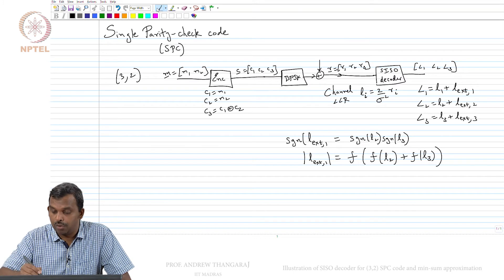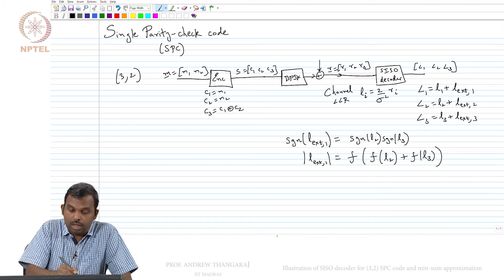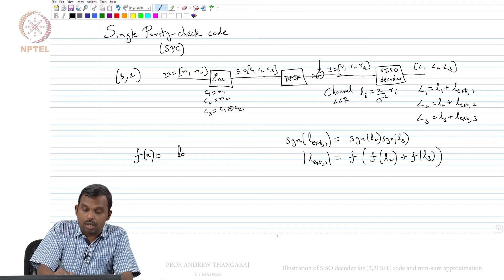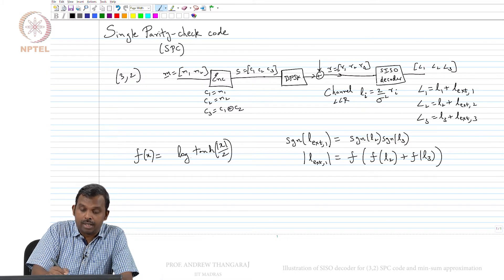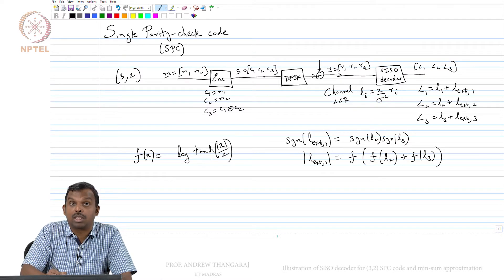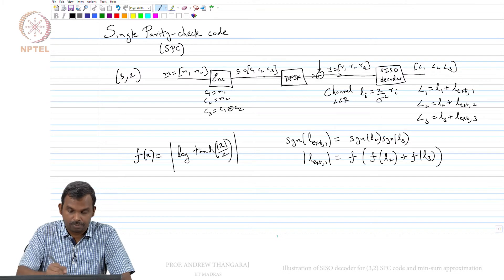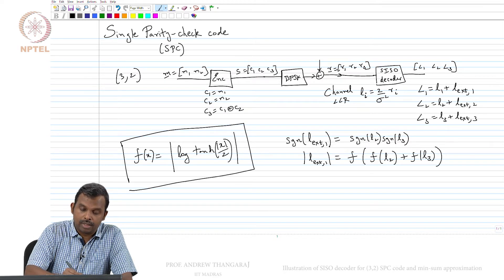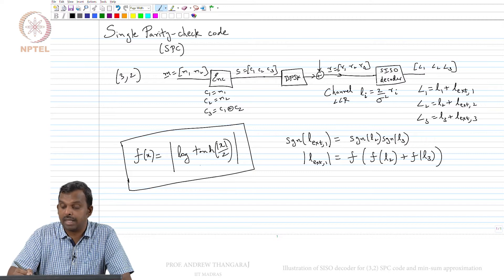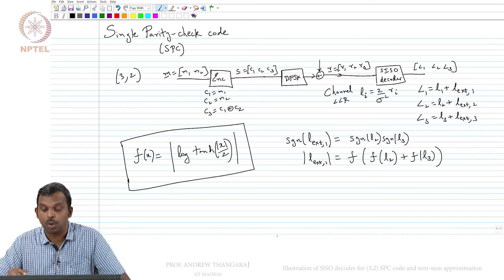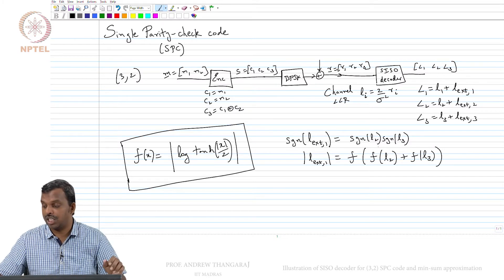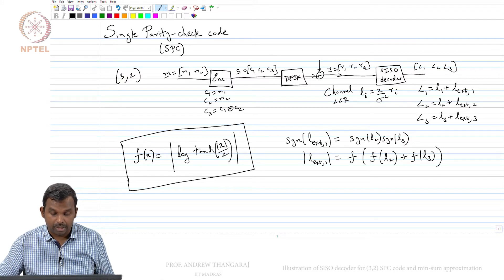In the decoder, for the calculation of the extrinsic LLR, the function F is involved. F(x) = |log(tanh(x/2))| — we put the absolute value because tanh is less than 1, so its log would be negative, and we want F to deal with positive values. So the absolute value of LX1 is F(L2) + F(L3), and the sign of LX1 is the product of the two signs.